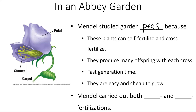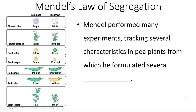Gregor Mendel carried out both self- and cross-fertilizations using these pea plants. In his experiments, he looked at many different traits. He found that purple flower color was dominant to white flower color, that axial position of flowers was dominant to terminal flowers, that yellow peas are dominant to green peas, but that green pod color is dominant to yellow pod color. After performing these experiments over and over, Gregor Mendel formulated several hypotheses about how inheritance occurs.